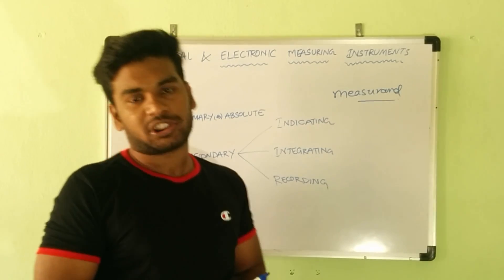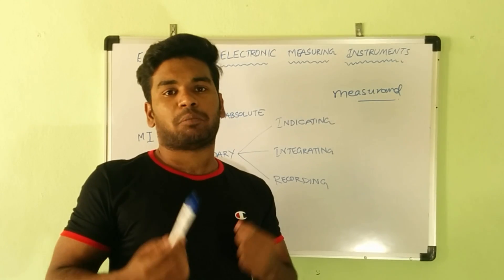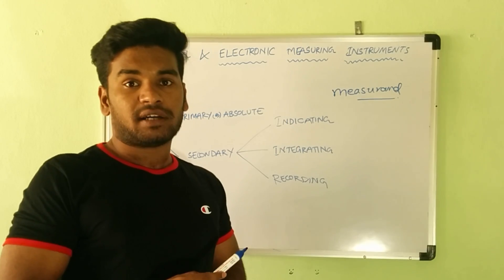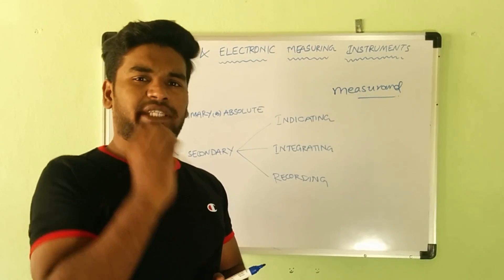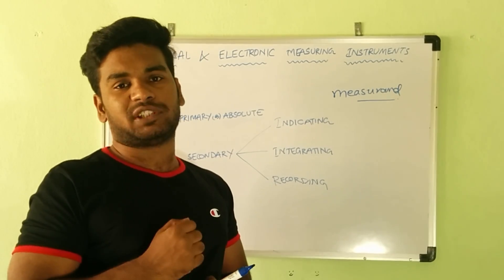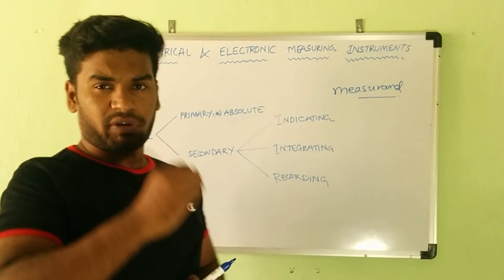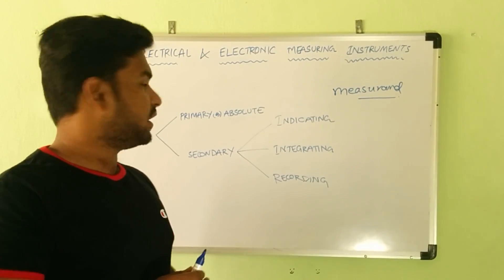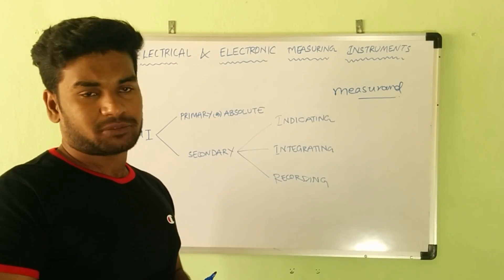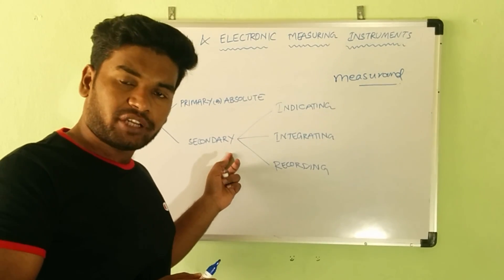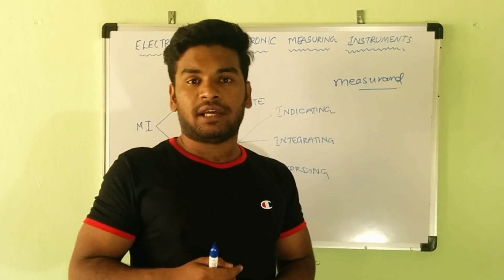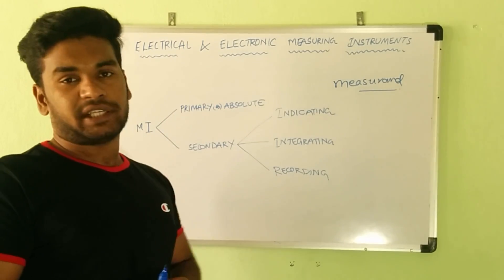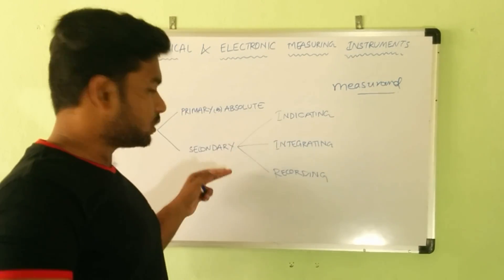Primary or absolute instruments are otherwise called standard equipment. These instruments are used in research laboratories where measurement of a precise nature is required — where we require the absolute value, the true value, of the quantity under measurement. Secondary instruments are what we find in our day-to-day life or day-to-day work. Wherever we go, we have ammeters, voltmeters, wattmeters — they all come under secondary instruments.